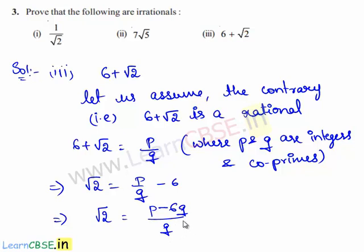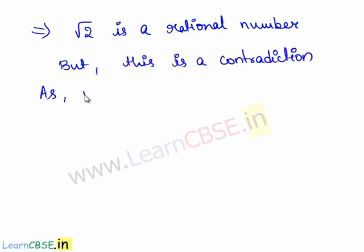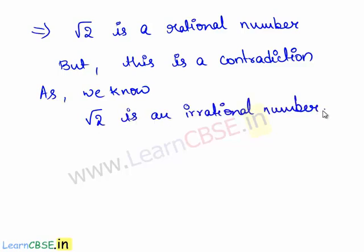Since p, q are integers, p minus 6q upon q on the right-hand side is a rational number. This implies that root 2 is also a rational number. But this is a contradiction, as we already know root 2 is an irrational number. The contradiction is obtained due to our wrong assumption that 6 plus root 2 is a rational number.